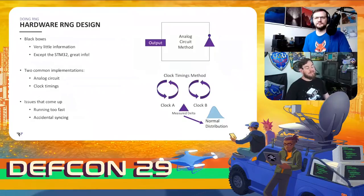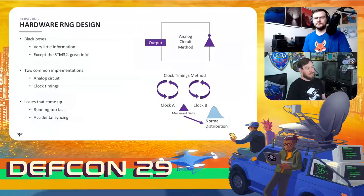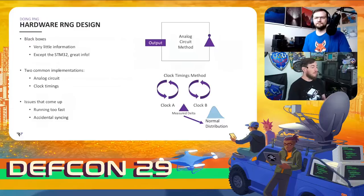There are some issues if you're calling the hardware RNG too often. If you're calling too frequently, that output from the analog circuit method may give you the same number twice in a row because you didn't give it enough time to transition. The same thing could happen with the clock method — you could end up with accidental syncing where both clocks happen to align at exactly the same offset. It's usually good enough as long as you're not calling it constantly.